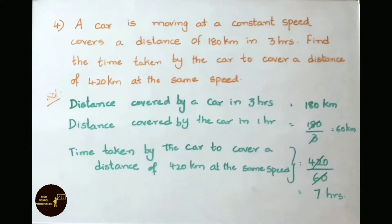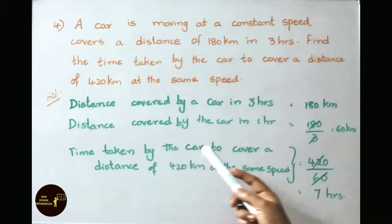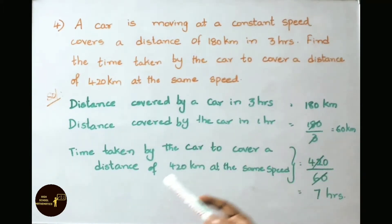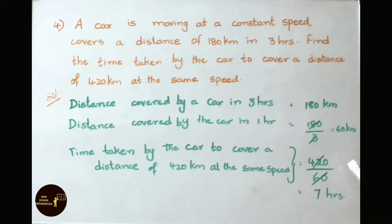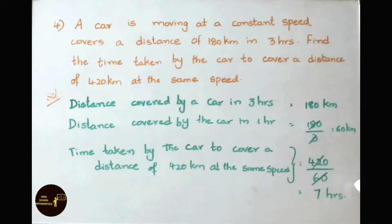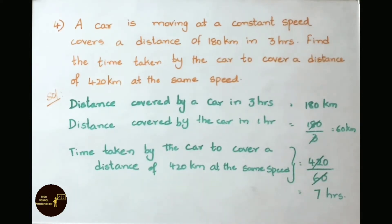They ask us to find the time taken by the car to cover a distance of 420 kilometers at the same speed. That equals 420 by 60. 60 times 7 is 420. So the time taken by the car to cover 420 kilometers is 7 hours.